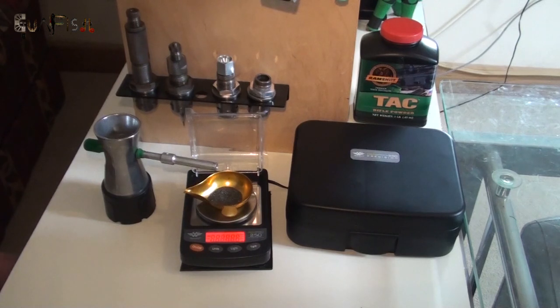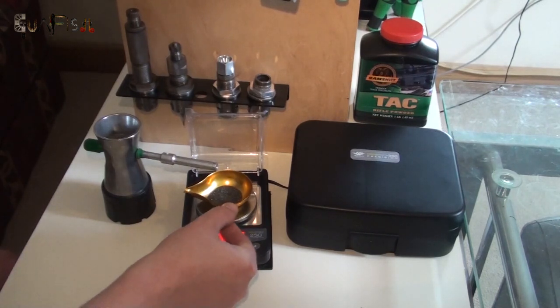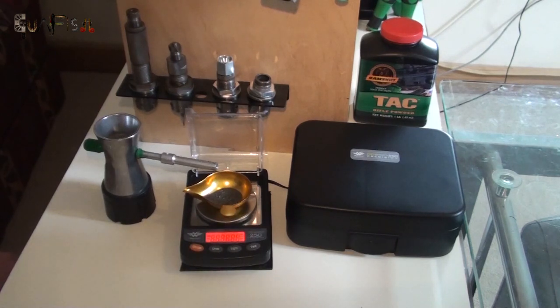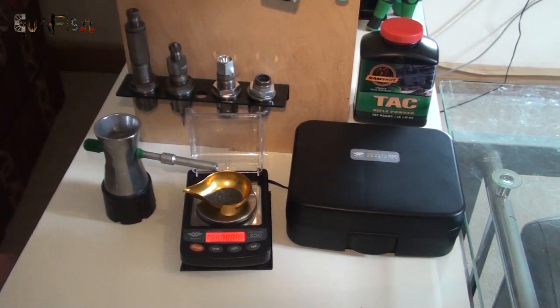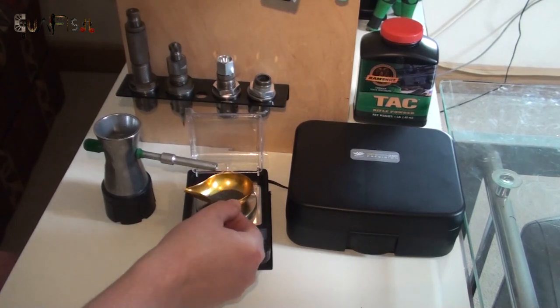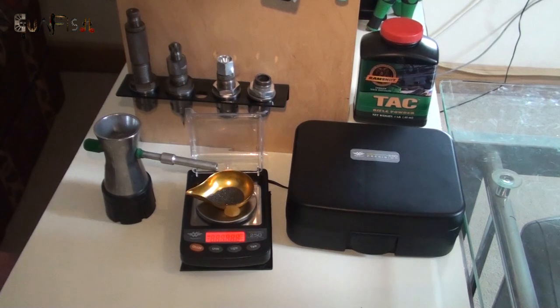See if it... right, 43.55. I pick the pan up and put it back down, it'll register that extra little bit I put on. See, 0.05 grain extra. That's what I find with these scales. They are accurate but you do need to just take it off and put it on.